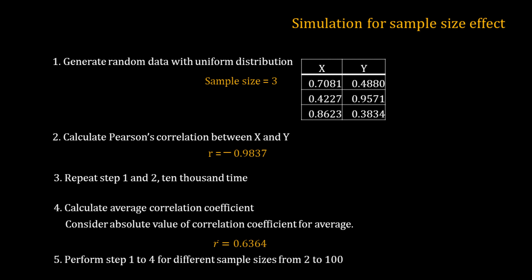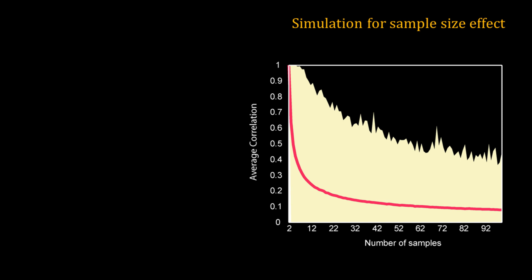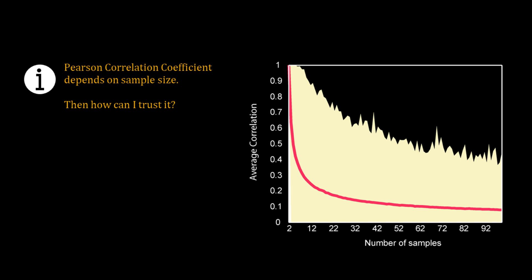It is not 0. I repeated the simulation with different sample sizes from 2 to 100. The result is shown in a plot where the red line shows the relation between sample size and the average Pearson correlation coefficient. Remember all this data was generated by sampling independently from a uniform distribution. This red line drops sharply as we increase the number of samples, but even for sample size equal to 10 the average value is above 0.2. The yellow region shows the range of correlation coefficients obtained — for sample size 10, values as high as 0.92 were observed.